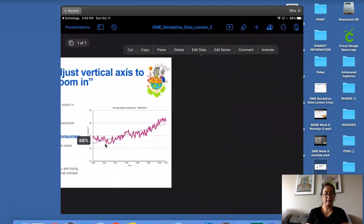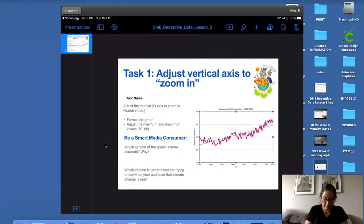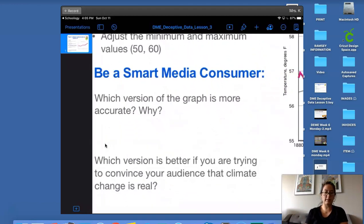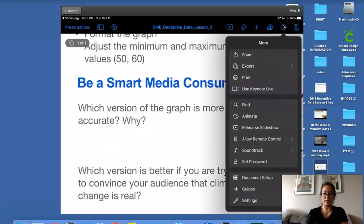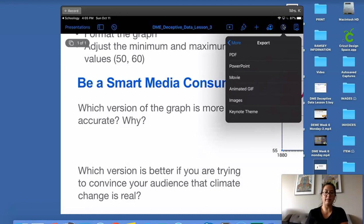All right. So now I've adjusted my graph. I've zoomed in. I want you to do the same thing. So pause, zoom in, adjust your minimum and your maximum. Then I want you to answer these two questions, complete sentences, and then turn it in. Remember you use export and PDF to turn into Schoology. All right.